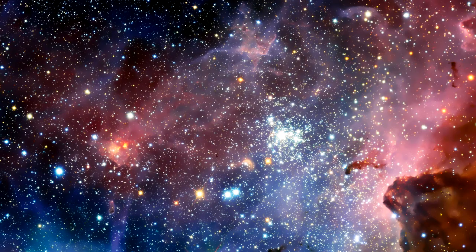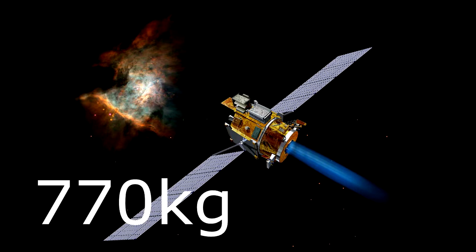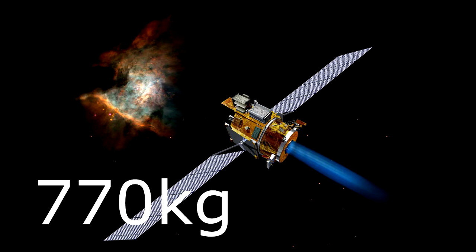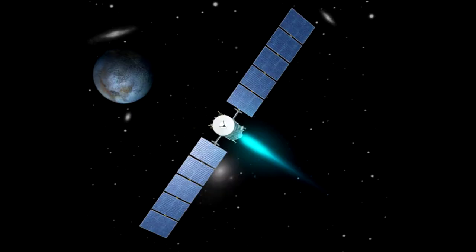The NEXT ion thruster has been operated for over 43,000 hours, which for rocket scientists means that the thruster has received over 770 kilograms of xenon propellant and can provide 30 million newton-seconds of total impulse to the spacecraft. But how does the ion thruster work?